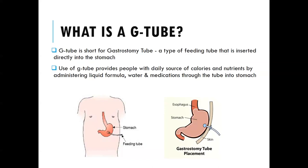Our first topic is the basics of what a G-tube is. The G stands for gastrostomy tube — a type of feeding tube inserted directly into the stomach. Feeding tube is an umbrella term, and the type we primarily recommend in our ALS population is a tube that goes directly into the stomach.